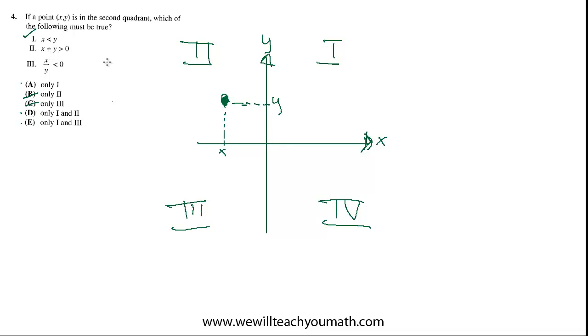x plus y is greater than 0. Well, let's just pick a value for this point. What could this be? This point could be like negative 3, 3, right? So in that case, x plus y is 0. So x plus y isn't greater than 0. So 2 isn't always true. By the way, for something to always be true, it's hard to prove. You really have to think about all the possible counterexamples.